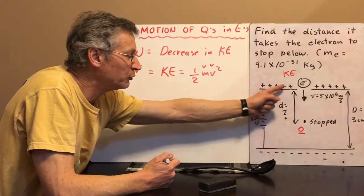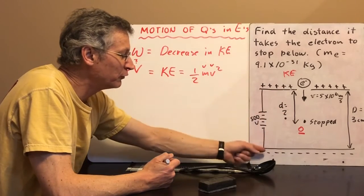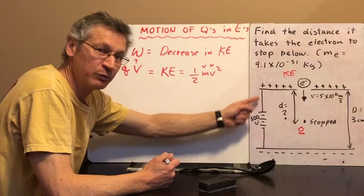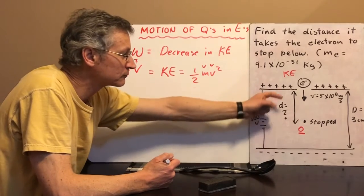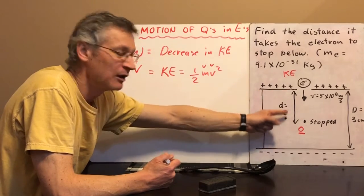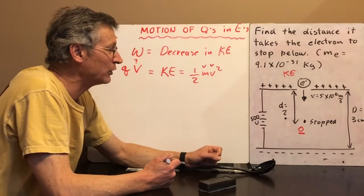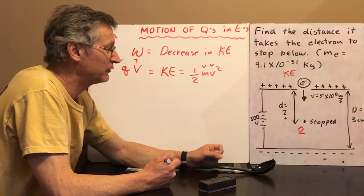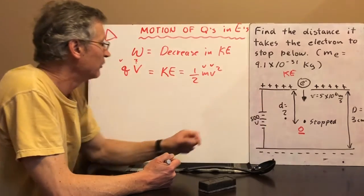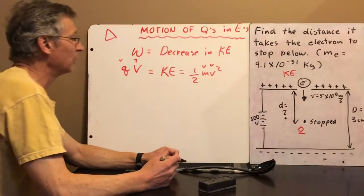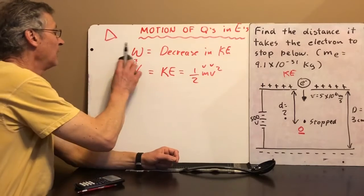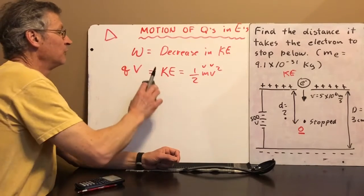So take a look. We've got an equation. We can solve it for the voltage it's moving through. And from the voltage it's moving through, remember, it's not moving through 500 volts. That's from the positive plate to the negative plate. It's just moving through this voltage here, this potential difference here. If we can figure out that potential difference, we can figure out this distance.